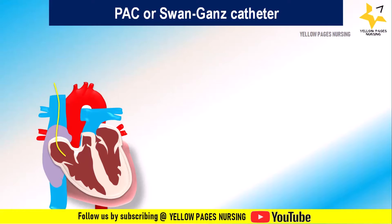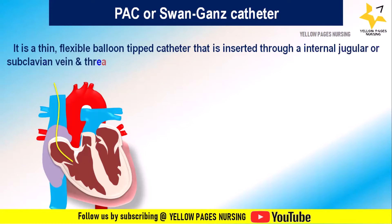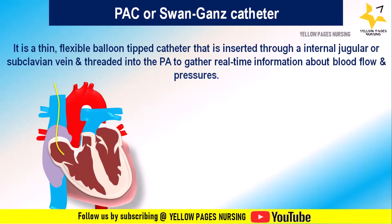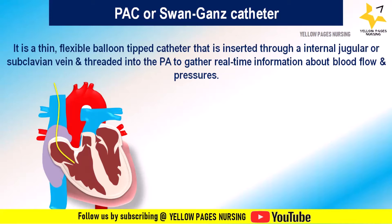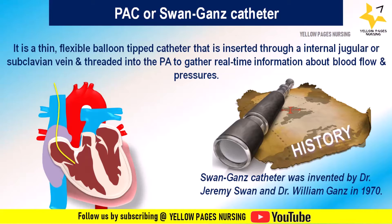Let's get into the topic. What is the pulmonary artery catheter? The pulmonary artery catheter, commonly known as the Swan-Ganz catheter, is a medical device used for hemodynamic monitoring in critically ill patients. It is a thin, flexible, balloon-tipped catheter inserted through a large vein — often the internal jugular or subclavian vein — and threaded into the pulmonary artery to gather real-time information about blood flow and pressures. The Swan-Ganz catheter was invented by Dr. Jeremy Swan and Dr. William Ganz in 1970.